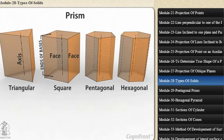A right regular prism has its axis perpendicular to the bases. All its faces are equal rectangles.